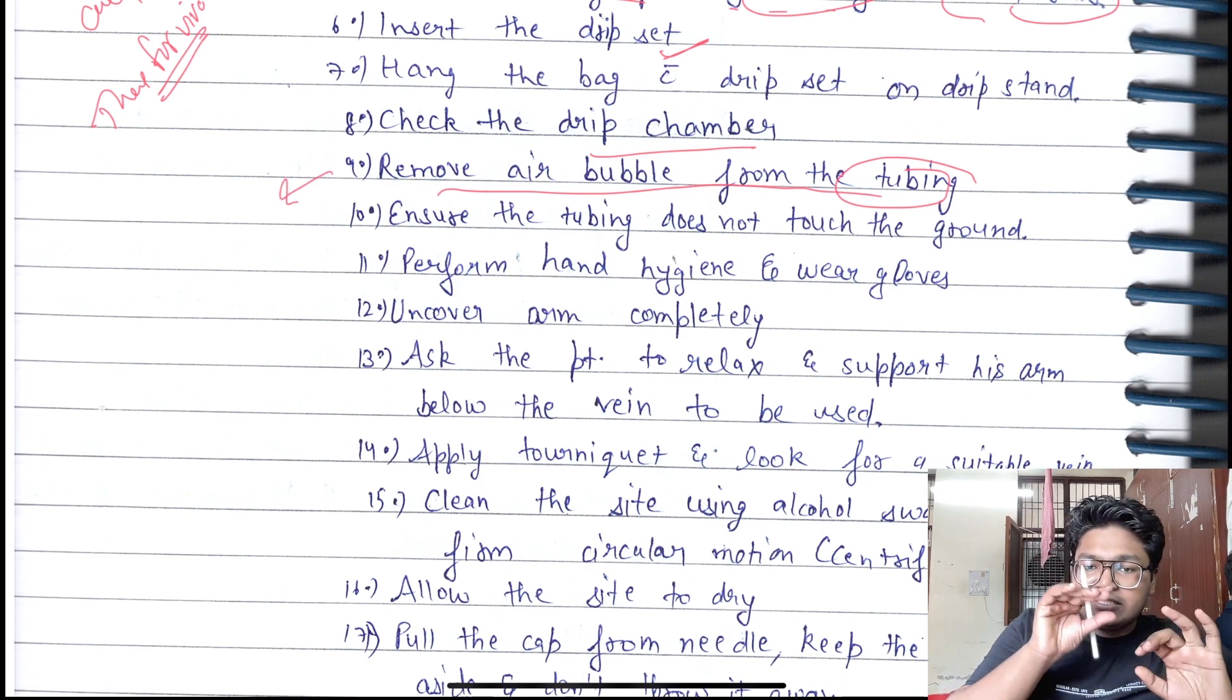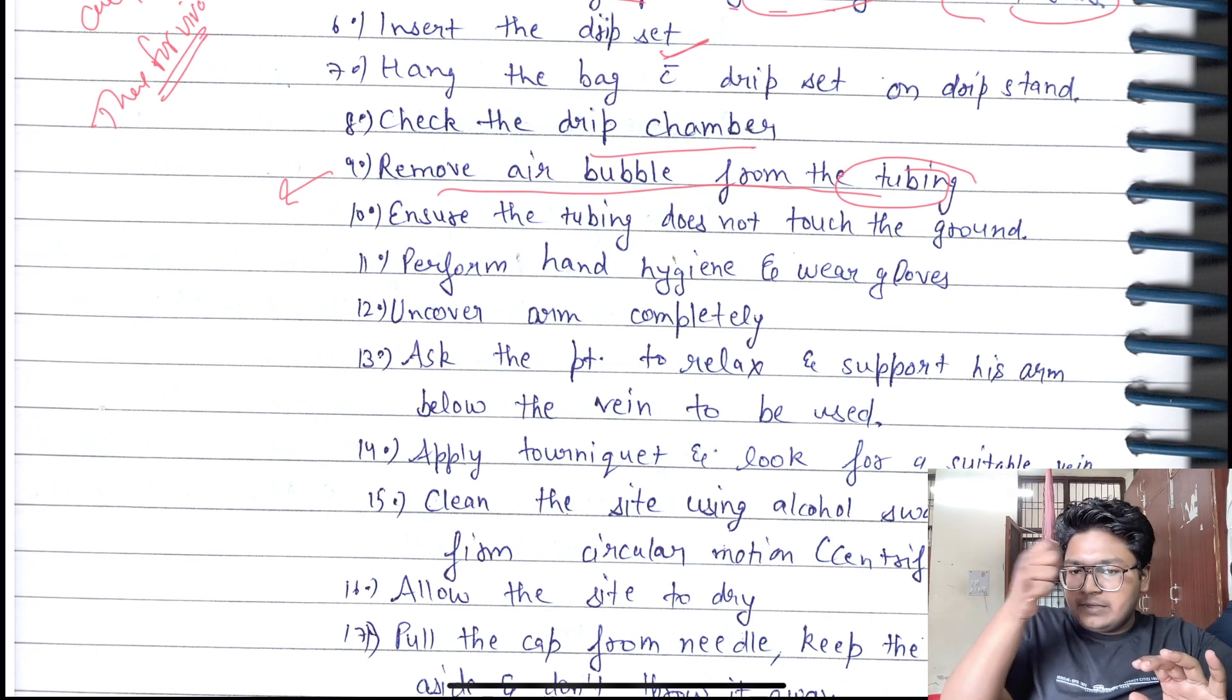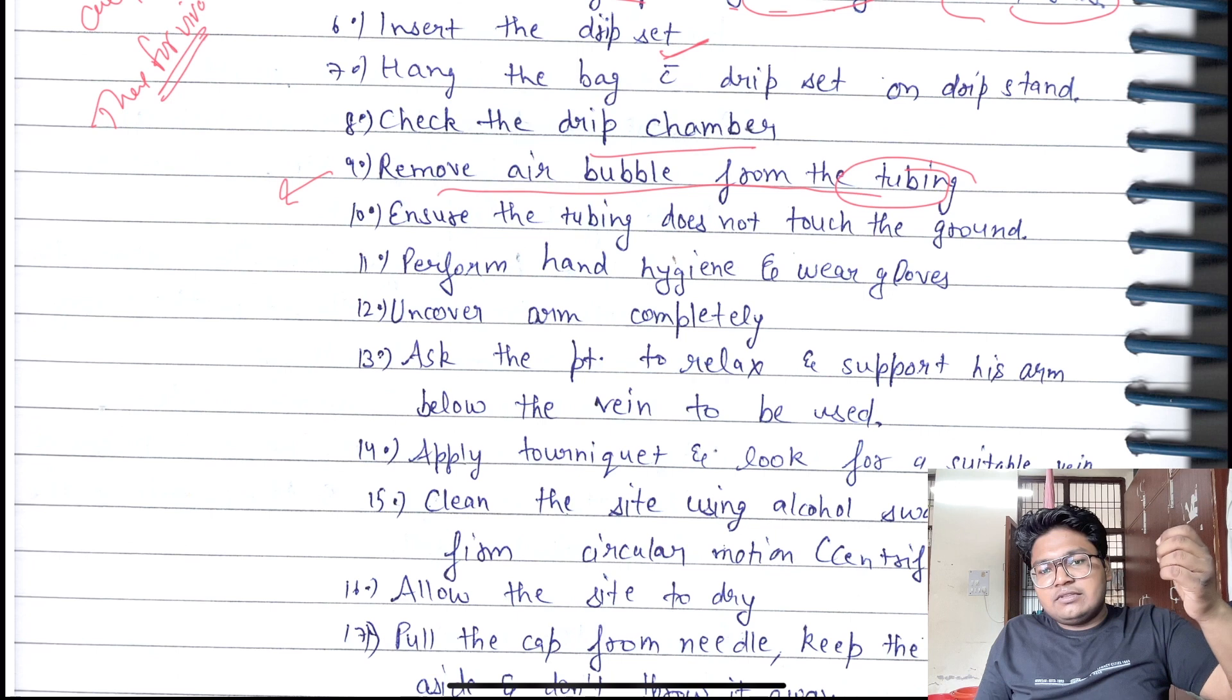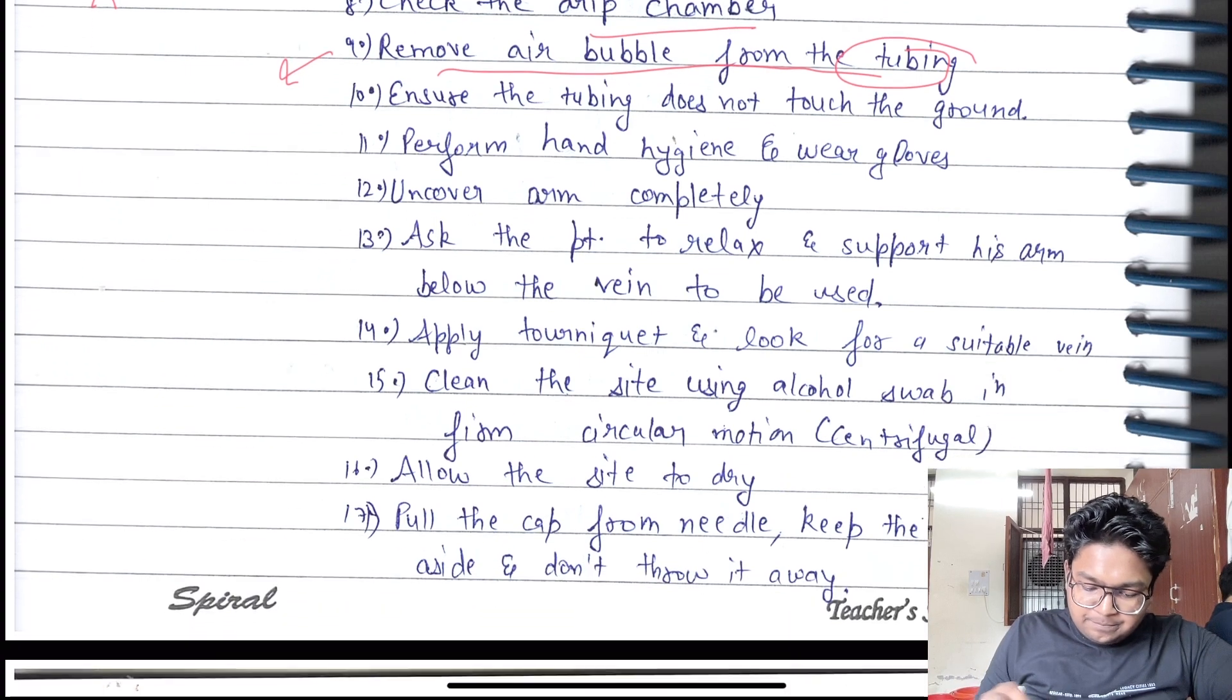Check that the drip set is not touching the ground. Hold the drip chamber on the bottle itself. Remove air bubbles from the tubing - many students make mistakes here. The answer is: take the other end of the drip and drip set, put it like this, and start the roller. The fluid will come and wash the whole needle and spill a few drops of fluid, and it will clear all the air in the pipe.